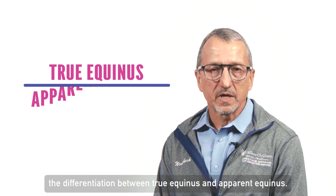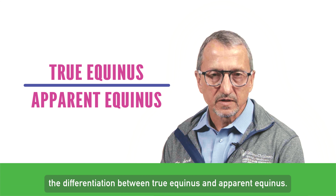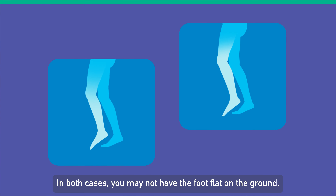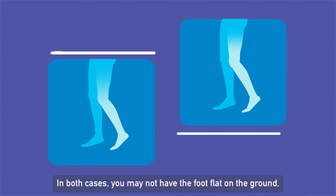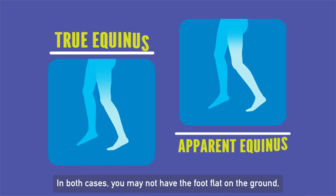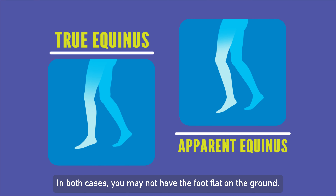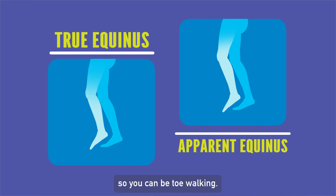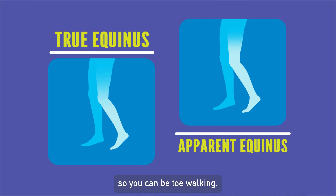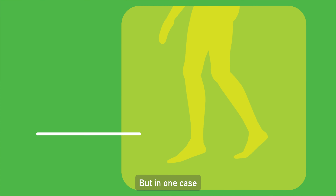And as a result, muscles and joints can be tight, bones can be out of alignment, and all of those factors can work together to adversely affect cerebral palsy gait.